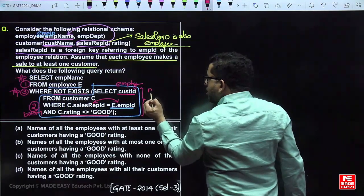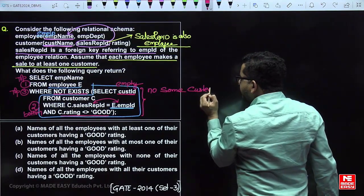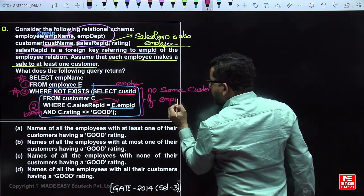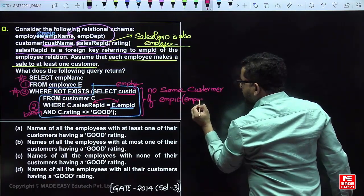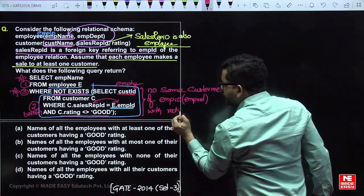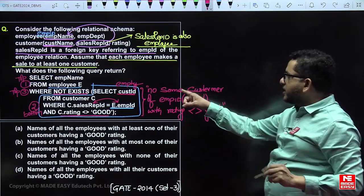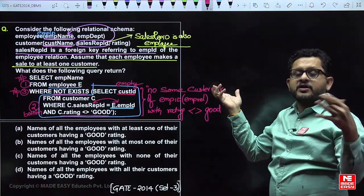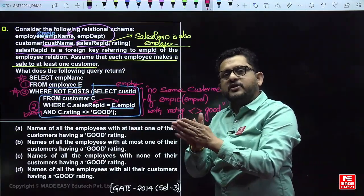When the inner query is not empty — meaning there is at least one customer of the given employee_id with rating not equal to 'good' — the employee is rejected. The WHERE condition is true only if there is no customer of that employee with rating not equal to 'good', meaning every customer of that employee who works as a sales representative has a rating equal to 'good'.